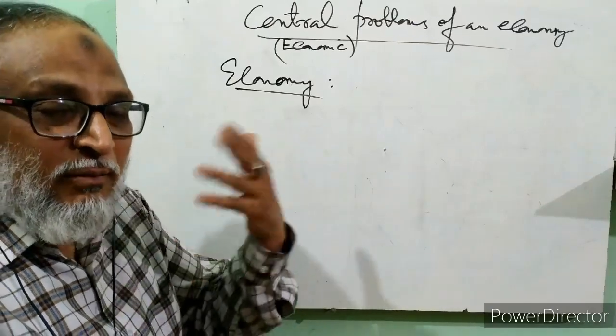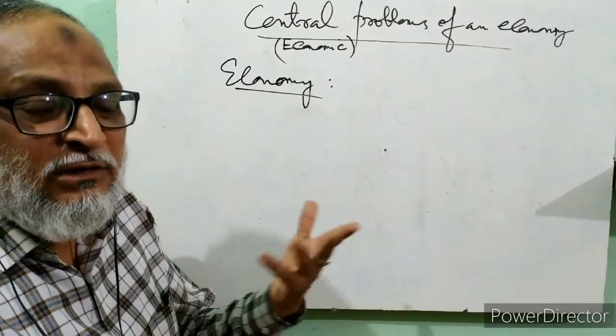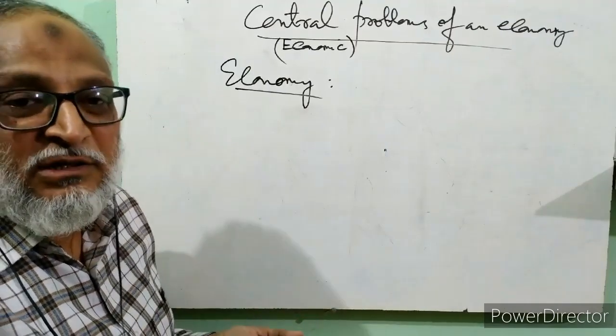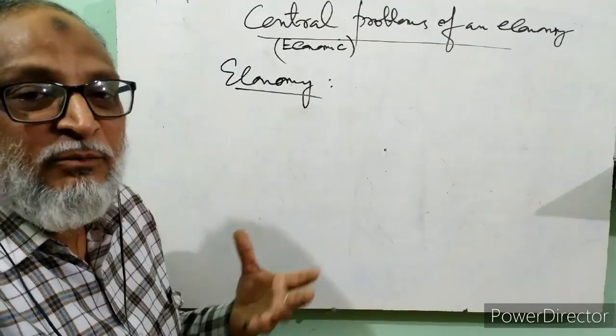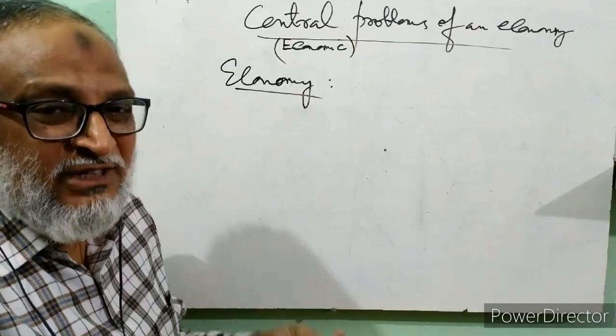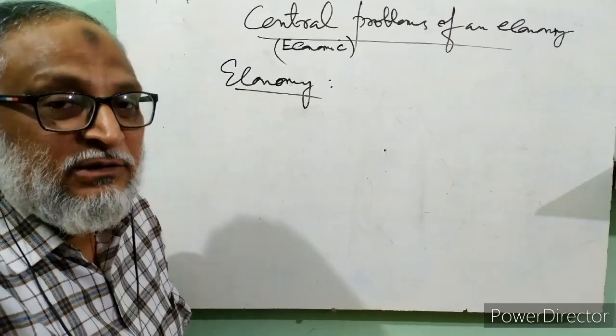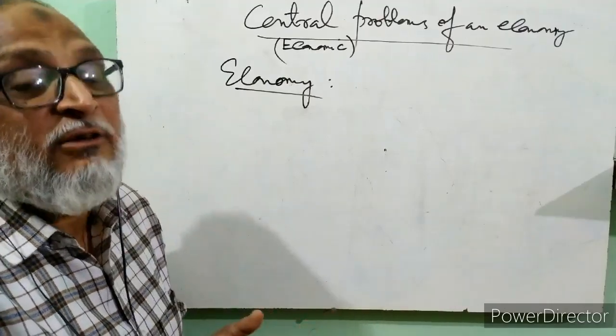There are three types of economies. Number one is capitalist economy, where there is whole private control. The means of production, factors of production are owned, managed and governed by private sector, which is also called market economy.